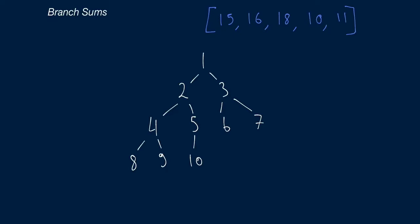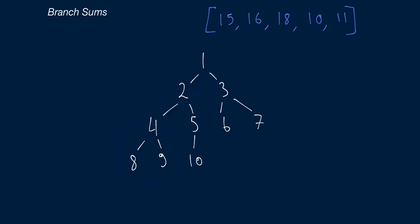The answer to this problem for the example in front of me is this array: 15, 16, 18, 10, 11. All five of these numbers are obtained by summing up the numbers in the various branches. For instance, you take the first branch and if you add up those four numbers, they sum up to 15. Similarly, if you add up these three numbers here, they add up to 10, and so on and so forth.